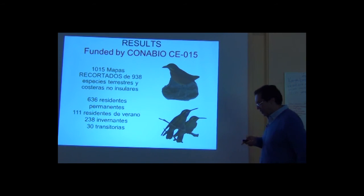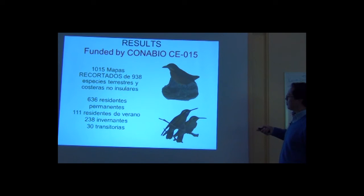And also this time we relied on CONABIO. CONABIO was really interested in having this data set so what we did is we transformed all the data all the species data of our database into 1,015 maps made by ecological niche modeling of 938 terrestrial species not coastal not insular of which more than 600 were resident areas, more than 100 summer residents, 200 winter areas and 30 transient species.